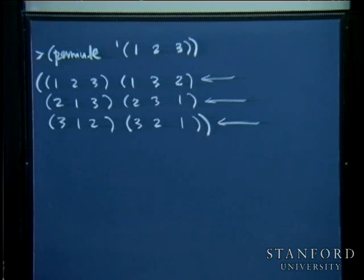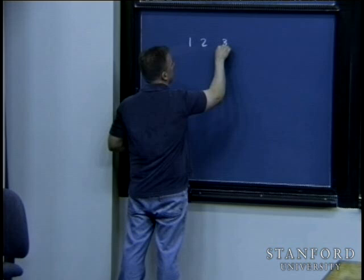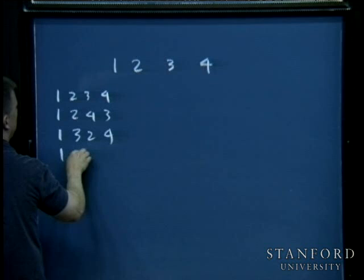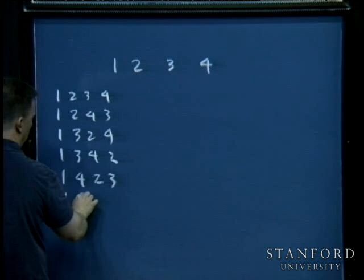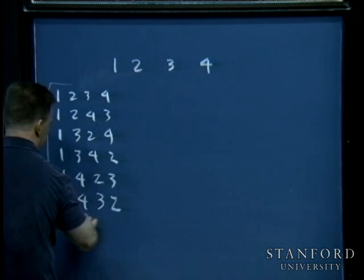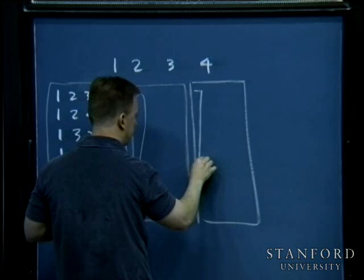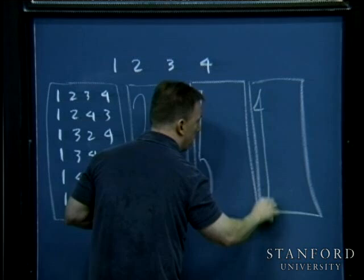For the permutations of {1, 2, 3, 4}, there are 4 factorial = 24 permutations, grouped by leading element. Those in the inner rectangle are the permutations of the original list with a particular element removed. These are all the permutations of {1, 3, 4} prefixed by 2; those are the permutations of {1, 2, 4} prefixed by 3, and so on. So it's the permutations of the list with that leading element removed.